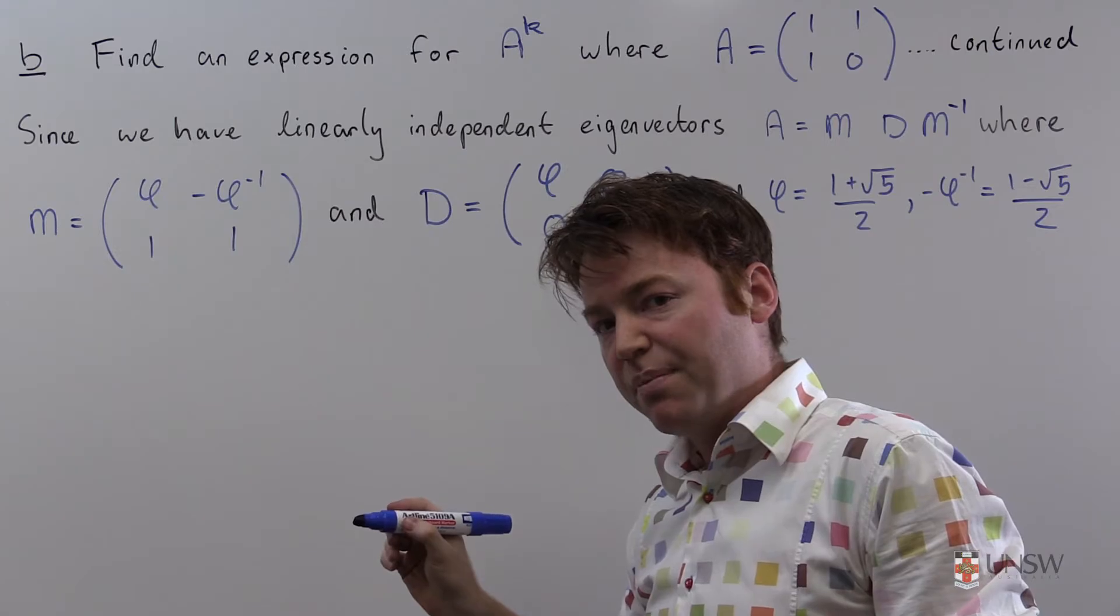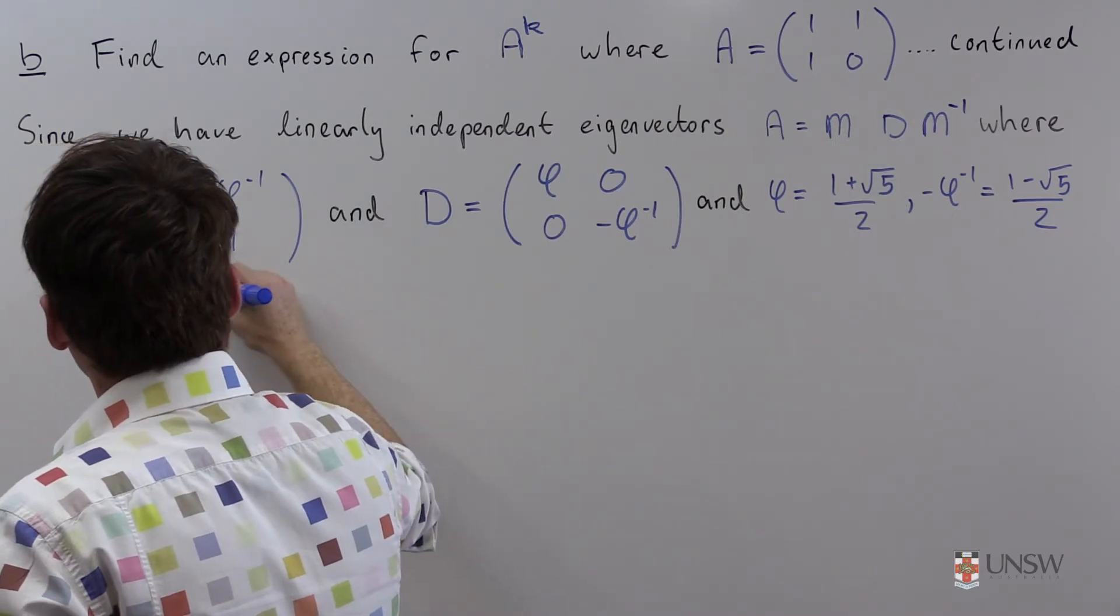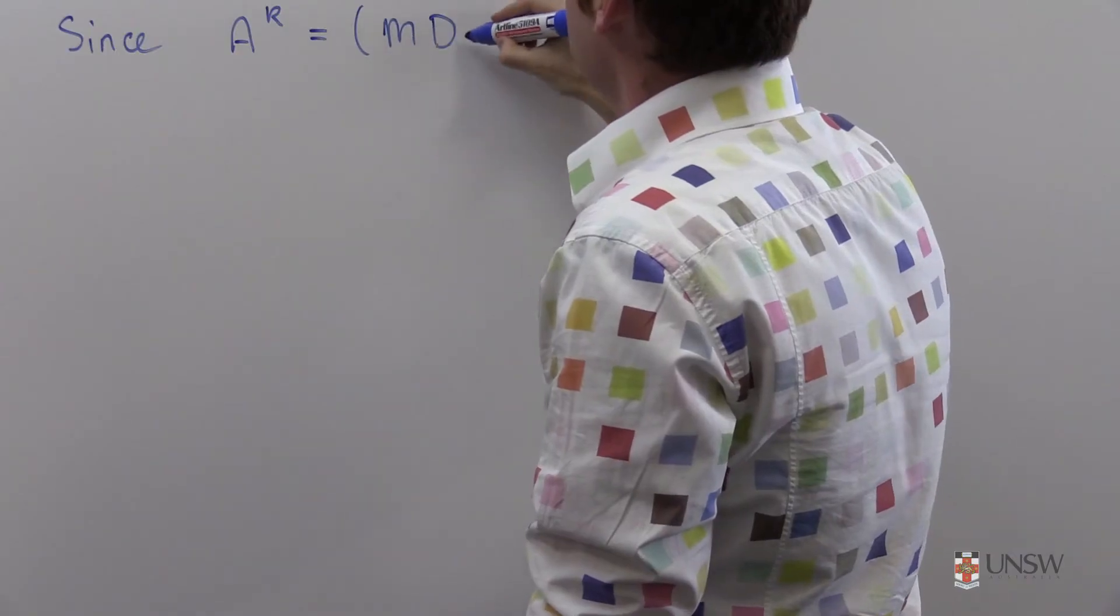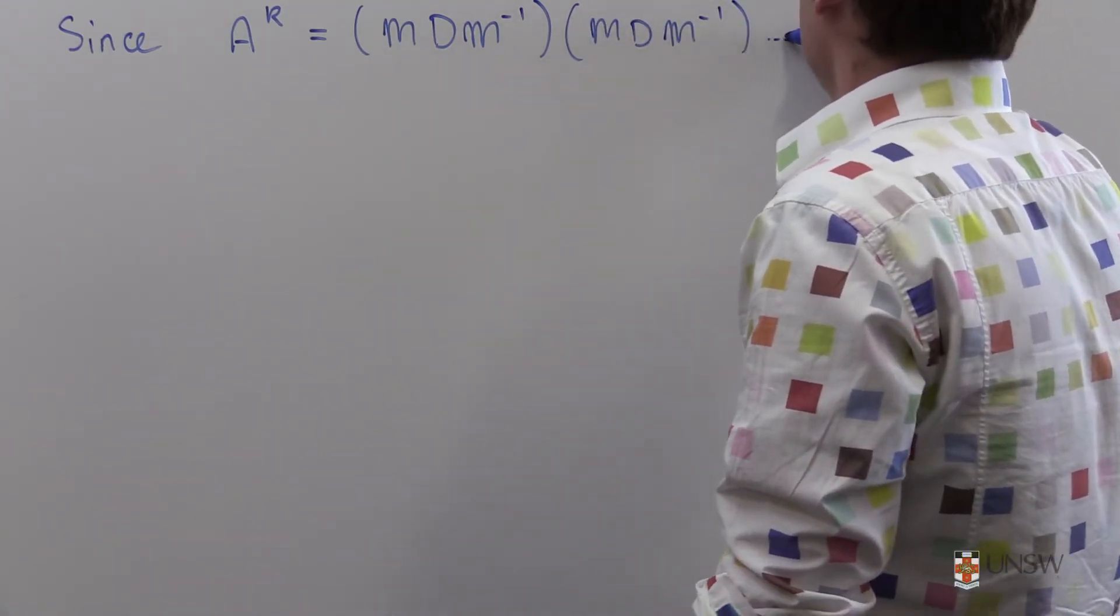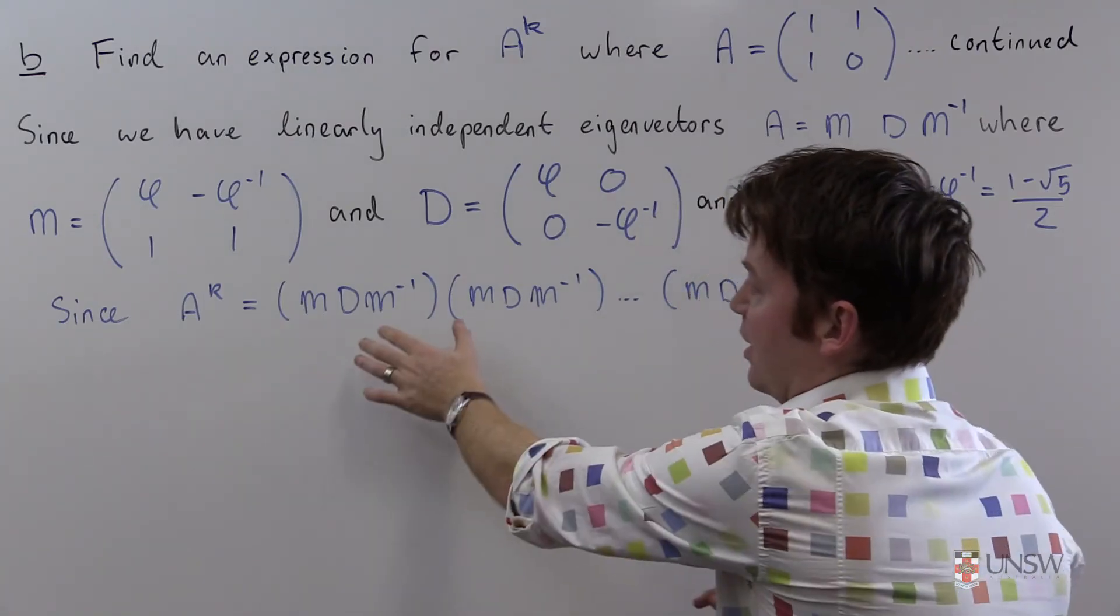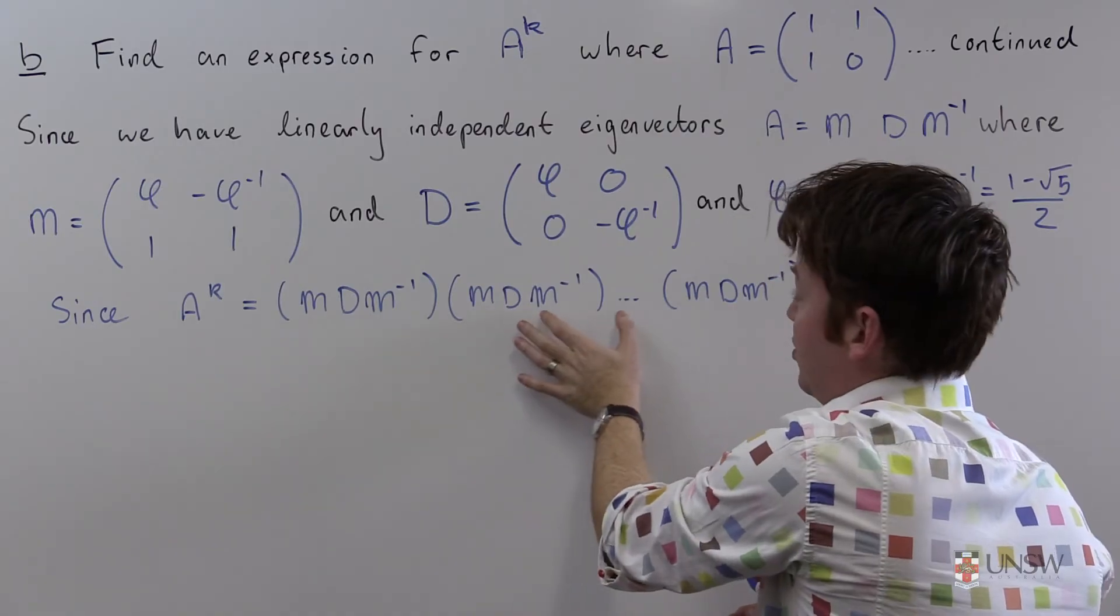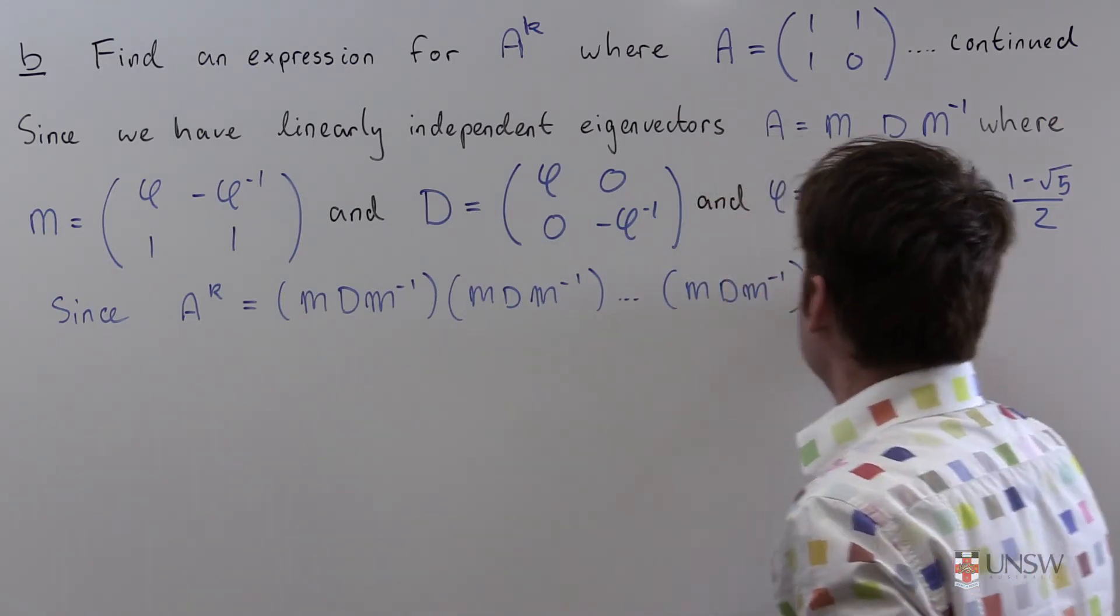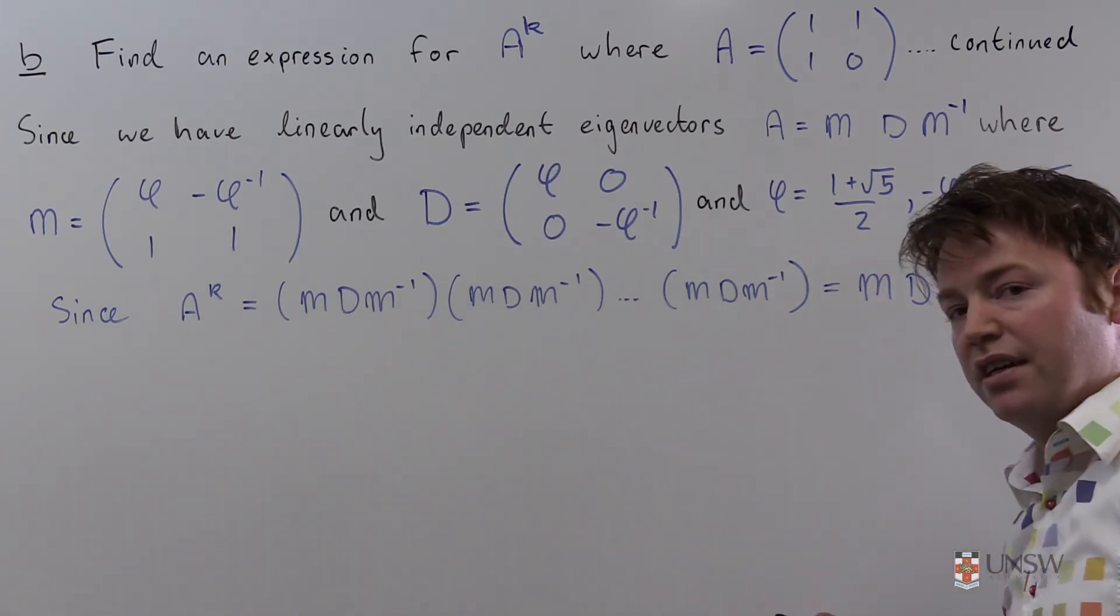So if we want a power of A, let's write it like this. Since A^k, well that's just going to be k copies of this. That's going to be MDM^(-1) times MDM^(-1) times ... MDM^(-1). And now I can rearrange my brackets and I'll merge this M^(-1) and this M into the identity matrix. I'll merge all the intermediate M and M^(-1) into the identity matrix as well. And all I'll get left with is M times D^k times M^(-1). Excellent.